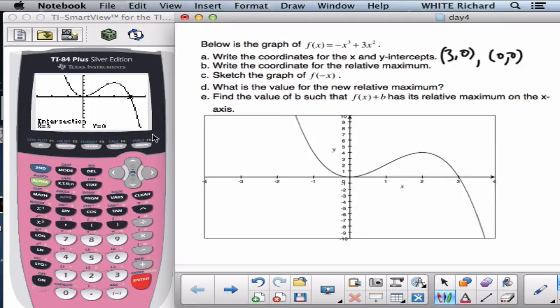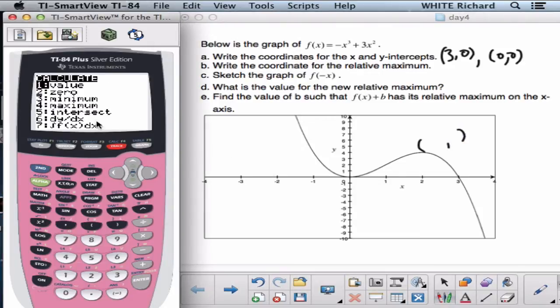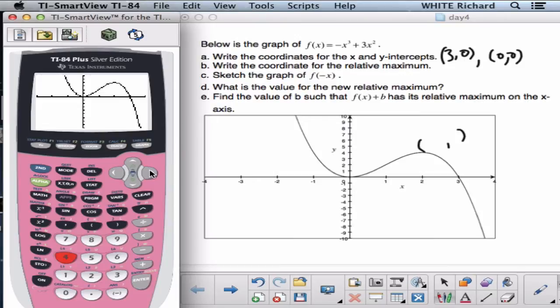Find the coordinate for the relative maximum. That's that point right there. Right there. So that coordinate, let's go find out. Second calc. Maximum, number 4. It says go to the left side of it. So enter. Go to the right side. Enter. And enter.